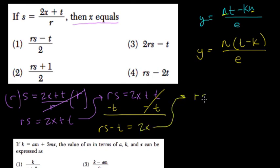Last step. So rs minus t equals 2x. Divide both sides by 2 because 2x equals this. Divide by 2. And x equals rs minus t over 2.